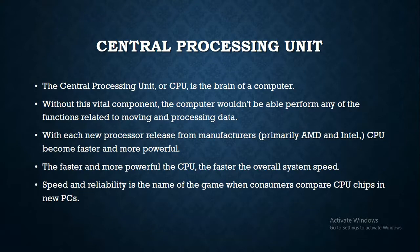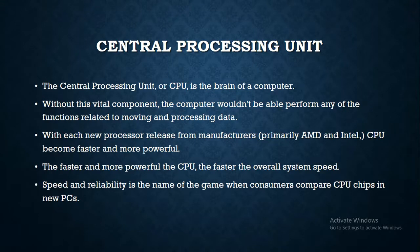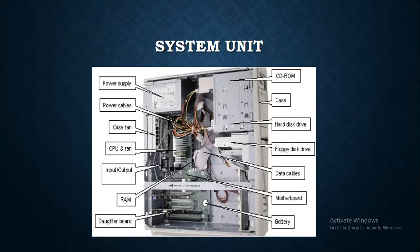First of all, the Central Processing Unit, also known as the brain of the computer. Without the CPU, no function can take place in the computer system. With the new processors released, the main processor brands are AMD and Intel, which provide quality processors. With these processors, the CPU becomes faster and more powerful.